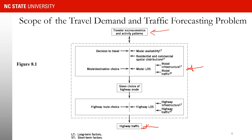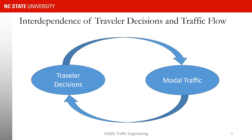The decision to make a trip eventually influences the traffic we have on the highway system. And the traffic on the highway system also influences your decision to make the trip. You can see a loop: these things influence one another. The decisions — whether to make the trip, when to make it, how to make it, and which route to use — influence traffic on highways, bus systems, and sidewalks, while the level of service on those systems feeds back into your travel decisions.